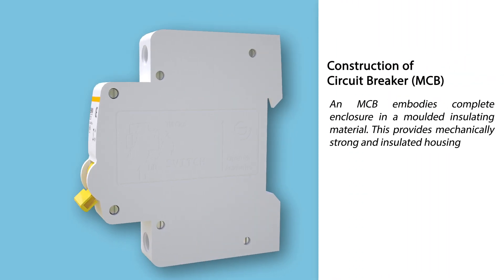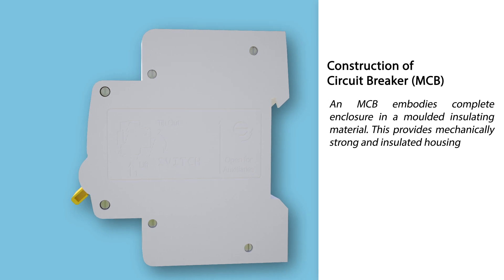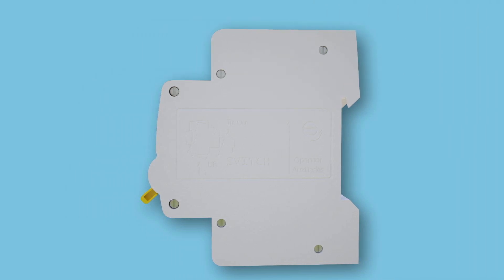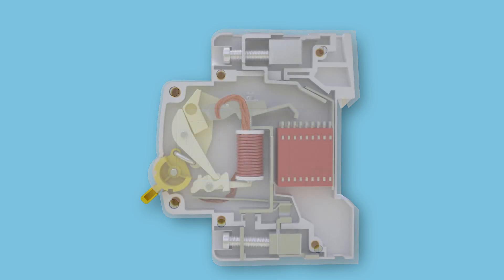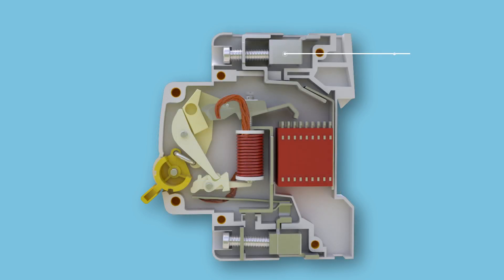In an MCB, the construction embodies a complete enclosure in a molded insulating material, providing a mechanically strong and insulated housing. The incoming terminal is made up of electrolytic copper or silver alloy, and this is where the incoming phase is fixed.